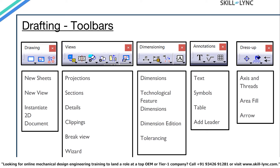Let me introduce you to another workbench in CATIA V5 called Drafting. This workbench is used to create drawing views that contain all the technical information required to communicate how an object is built or functions.